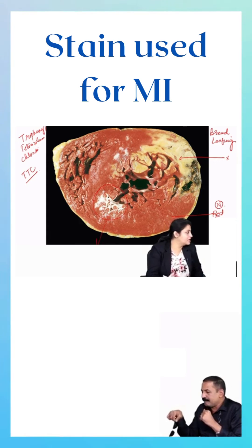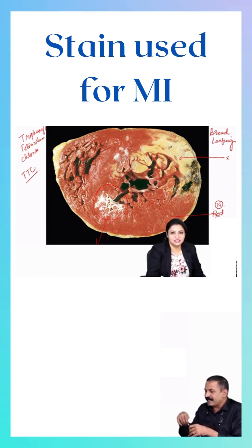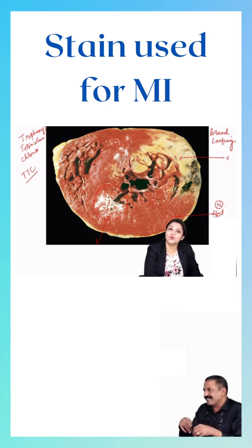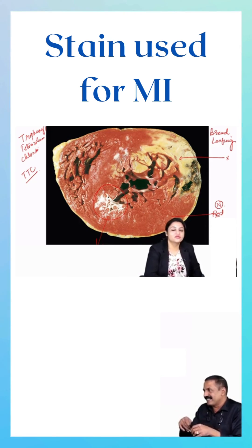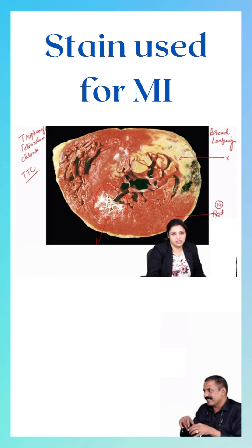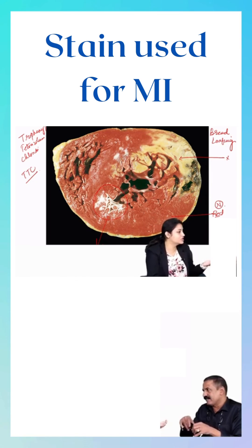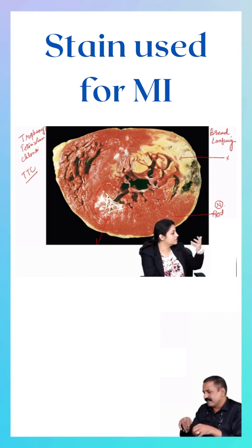Can you see these glistening white areas? What are these glistening white areas? Normally we say fibrosis. Whenever there is an old scar, that gets a glistening white appearance. So wherever we find those glistening white areas, we know that probably this patient has already gotten an infarct and it has undergone scarring.